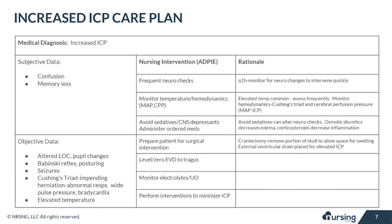The EVD, or external ventricular drain, should be leveled to the tragus to be approximately in line with the fourth ventricle of the brain. Any increase in ICP above 7 to 8 would cause cerebrospinal fluid to drain, because 10 centimeters of water correlates to approximately 7 to 8 millimeters of mercury ICP. If the EVD is not leveled properly, too much or too little cerebrospinal fluid could drain — too little drainage could cause increased ICP and possible brain herniation.